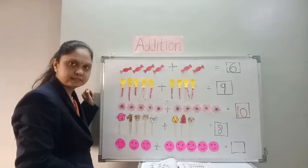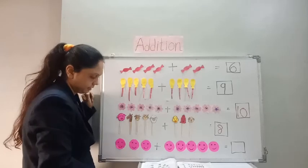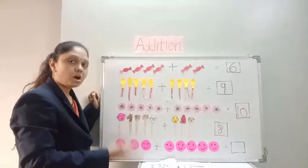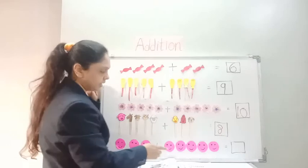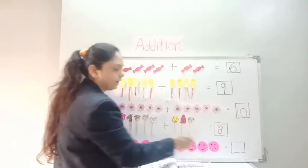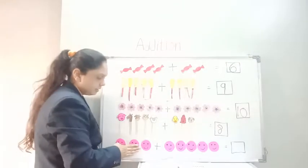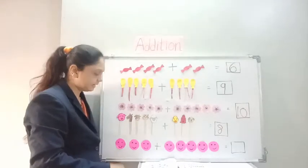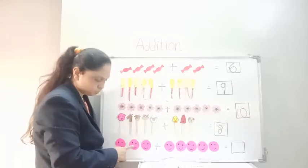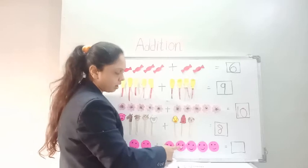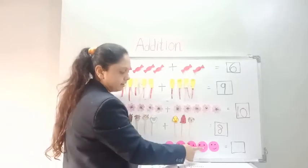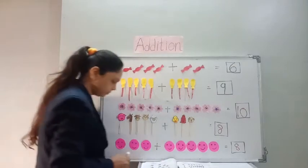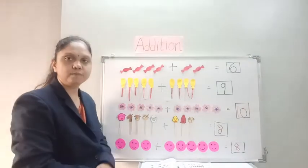Here is a smiley face — 1, 2, 3. There are 3 smiley faces. Then the teacher made more smiley faces — how many? 1, 2, 3, 4, 5. Five more were made. So 3 and 5 — count them together: 1, 2, 3, 4, 5, 6, 7, 8. Total is eight. Understood, everyone? Yes!